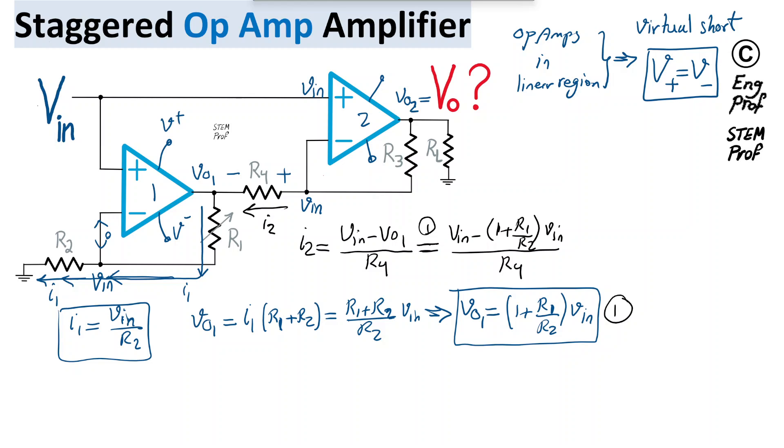Therefore, we can see that these two cancel out, and as a result, we get minus R1 over R2 R4 times V-in, and that's equation number 2 for I2.